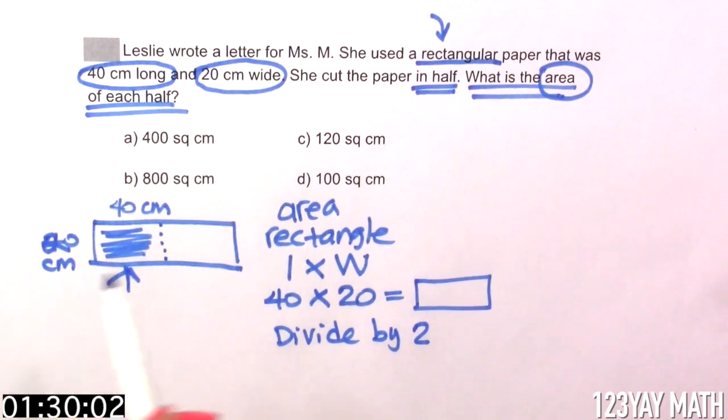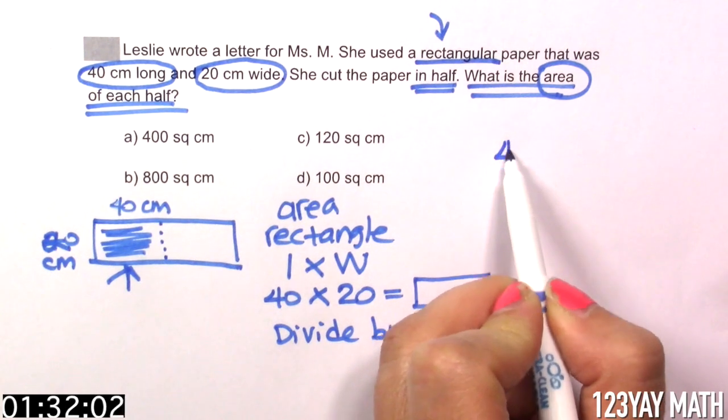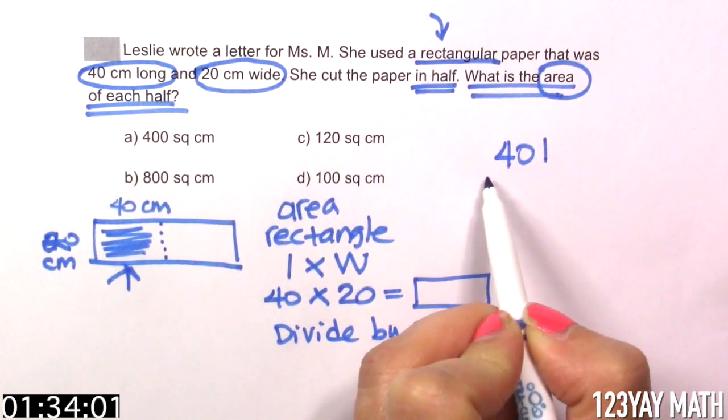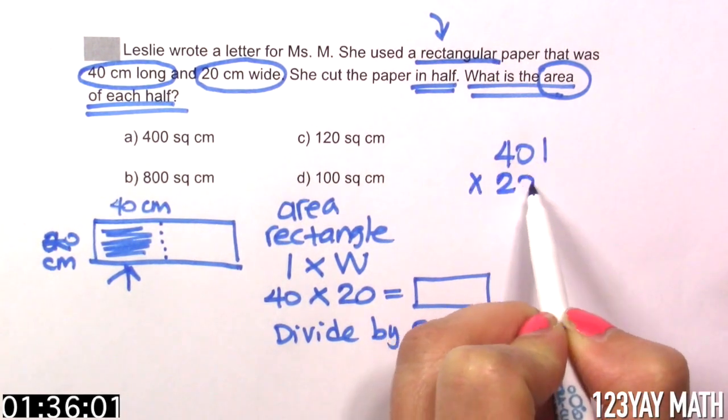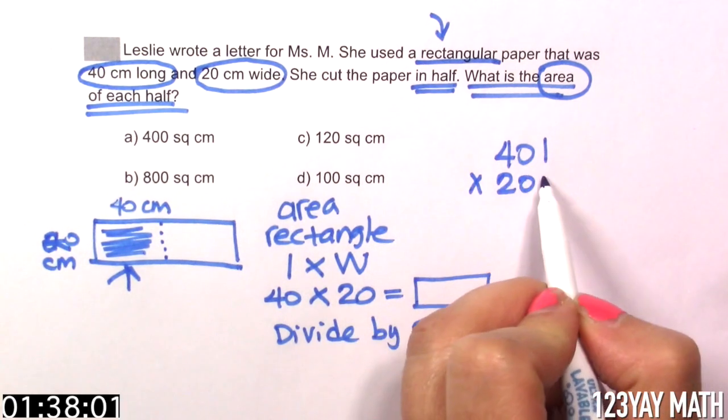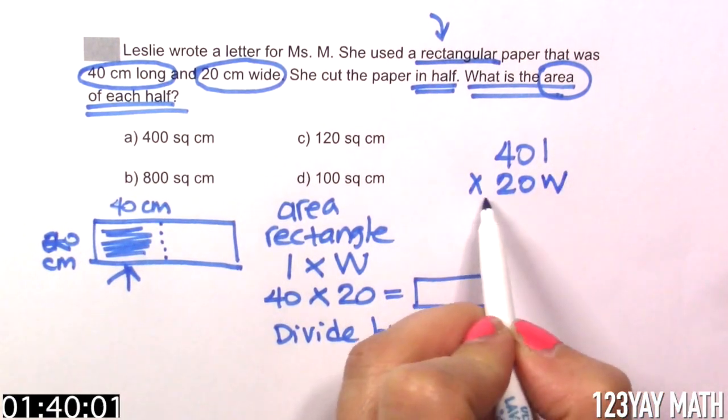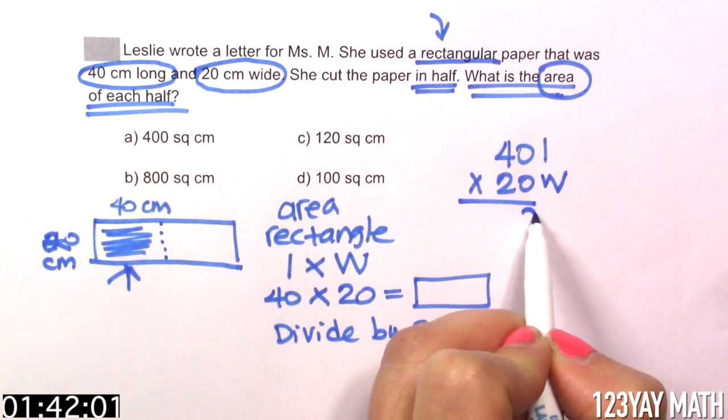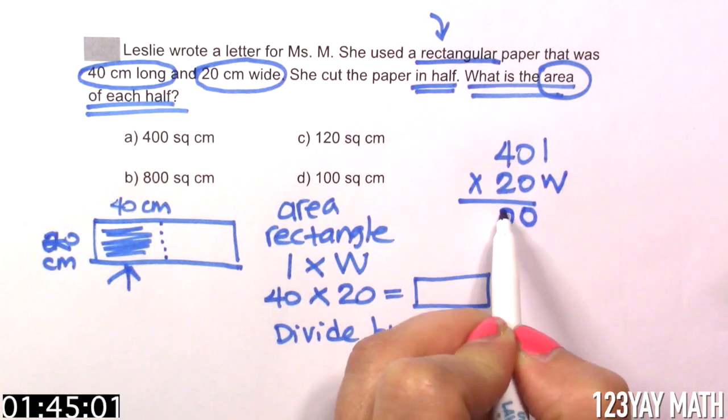So let's do that. 40 times 20. 40 is the length, times 20 is the width. 0 times 0 is 0. 0 times 4 is 0.